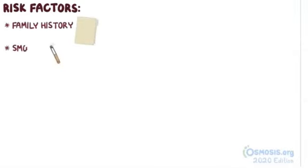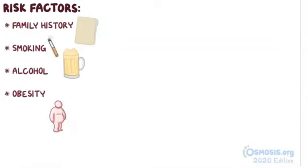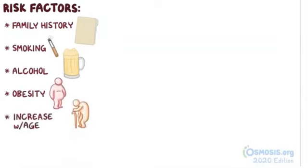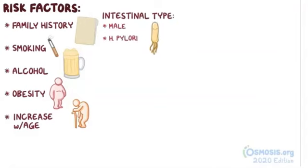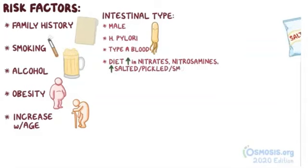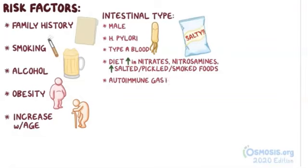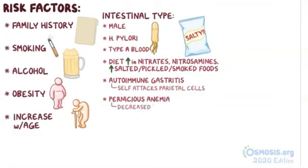Risk factors for gastric cancer include a family history of gastric cancer, smoking, alcohol consumption, and being obese. Also, the risk for gastric cancer increases with age. Specific risk factors for the intestinal type of adenocarcinoma include being male, H. pylori infection, having blood type A, a diet rich in nitrates, nitrosamines, highly salted foods, pickled or smoked foods, and conditions such as autoimmune gastritis, pernicious anemia, and achlorhydria. Autoimmune gastritis is when the immune system attacks the parietal cells, causing inflammation. Pernicious anemia is a condition where there's decreased production of red blood cells due to a deficiency of vitamin B12. And achlorhydria means decreased or lack of gastric acid production.